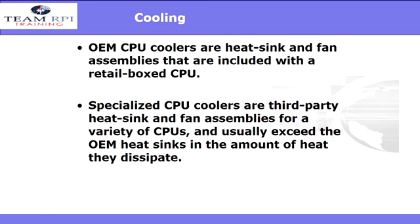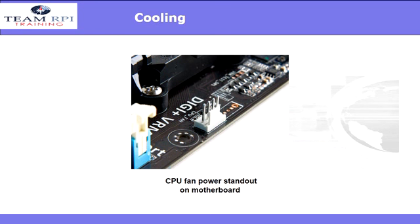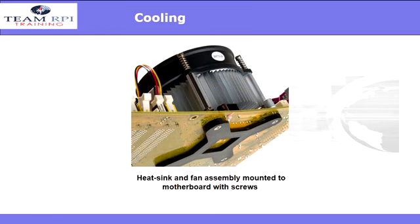If you require maximum cooling, you might want to consider liquid cooling — basically it uses water through a metal block that sits on top of your CPU to absorb the heat. To install whatever cooling system you choose, you need to apply a small amount of thermal compound — you'll hear it called heat dope — to the CPU before attaching the heat sink. Be careful: applying too much or too little can cause the CPU to overheat and fail. Here you see what's called a standout on the motherboard — it provides power to the CPU fan. Here's how you apply the thermal compound and put together the OEM heat sink and fan assembly, and to make sure it stays in place, on the underside of the motherboard you'll have mounted screws that you screw the entire assembly into.